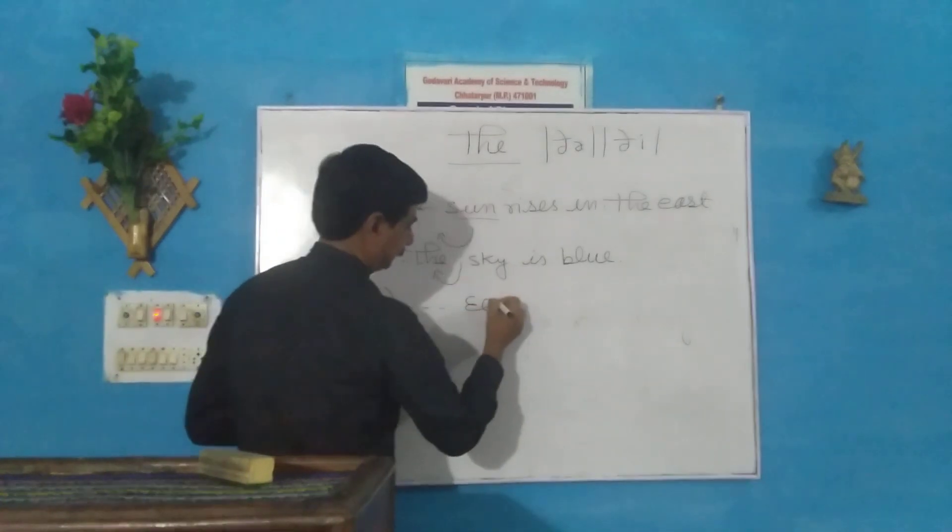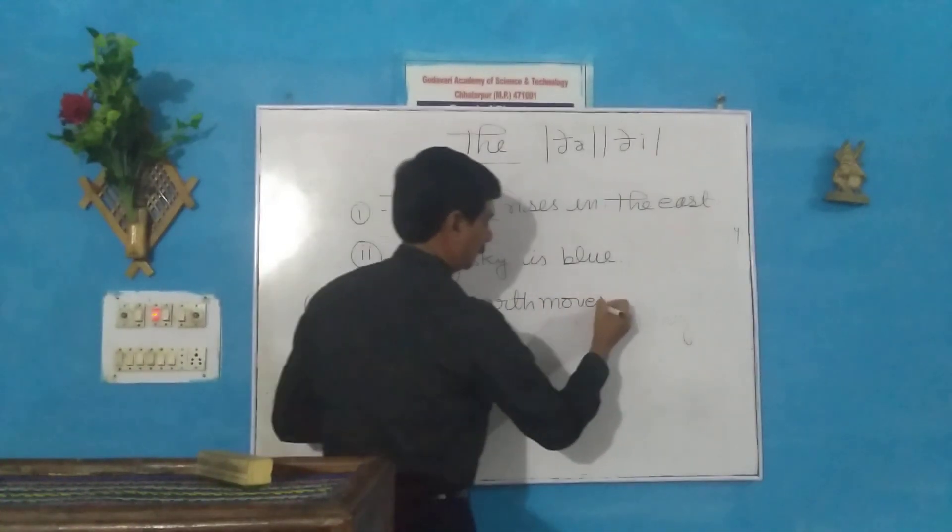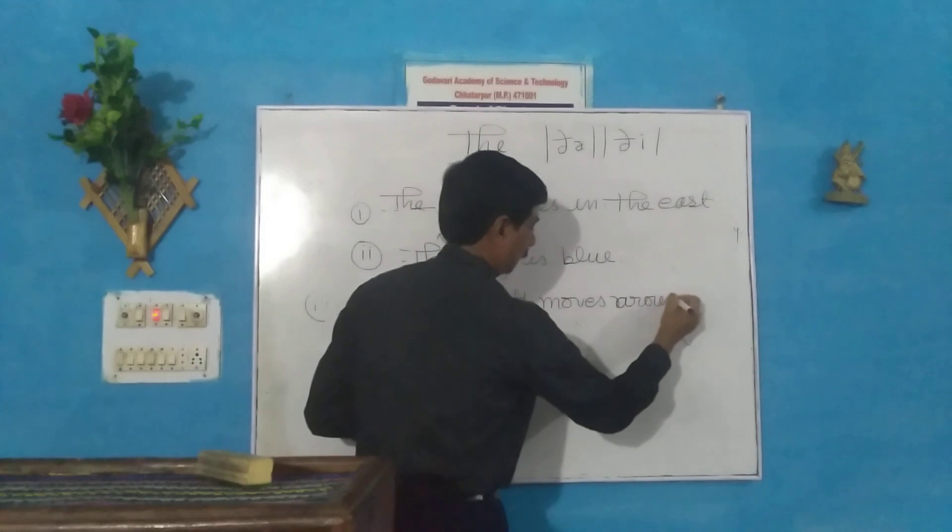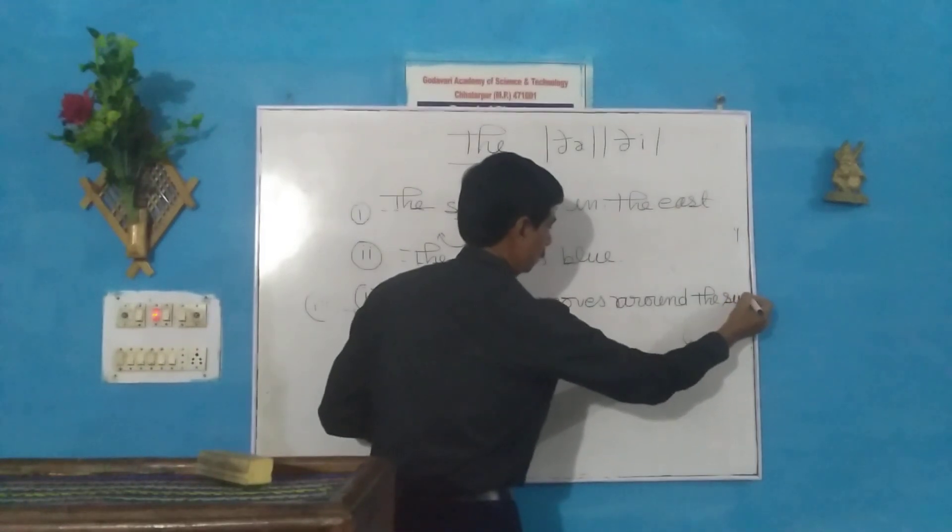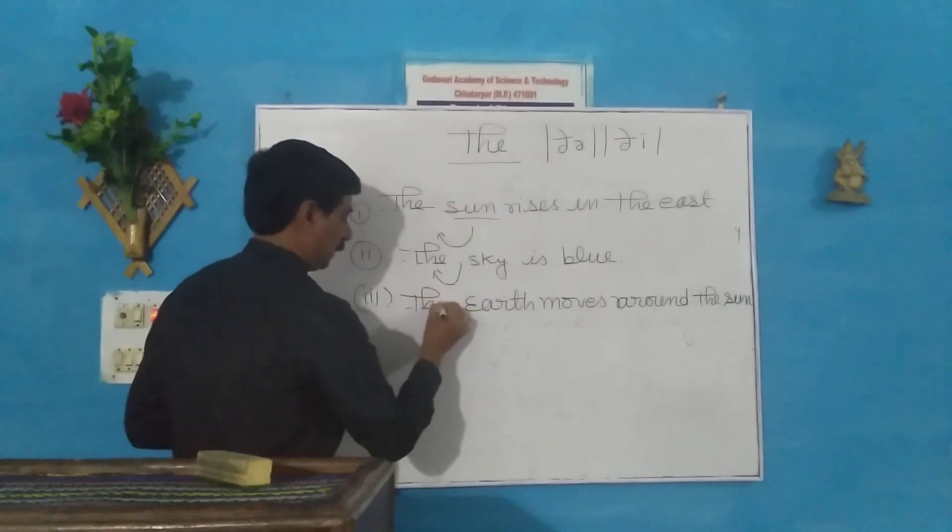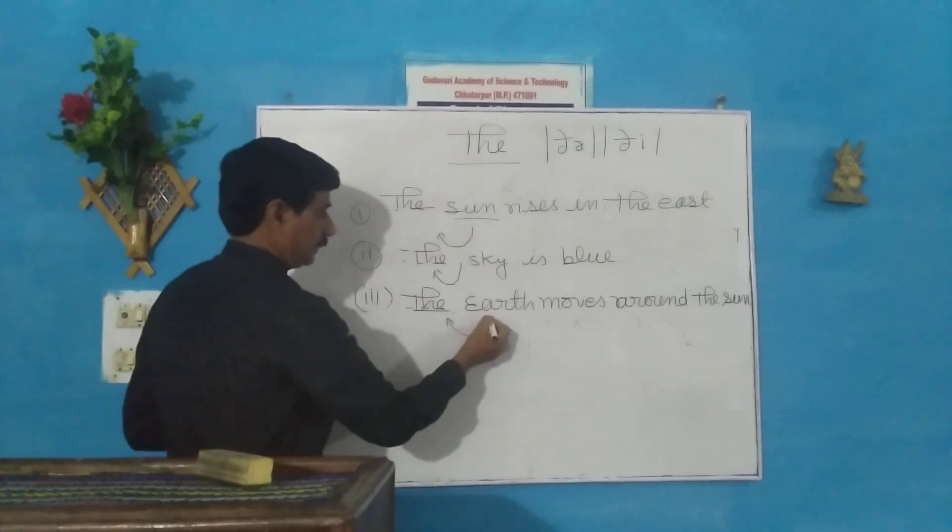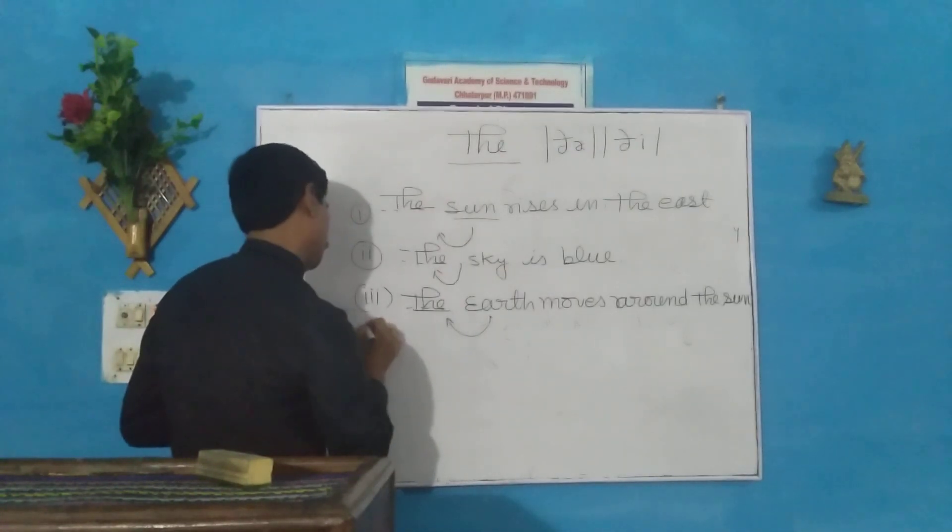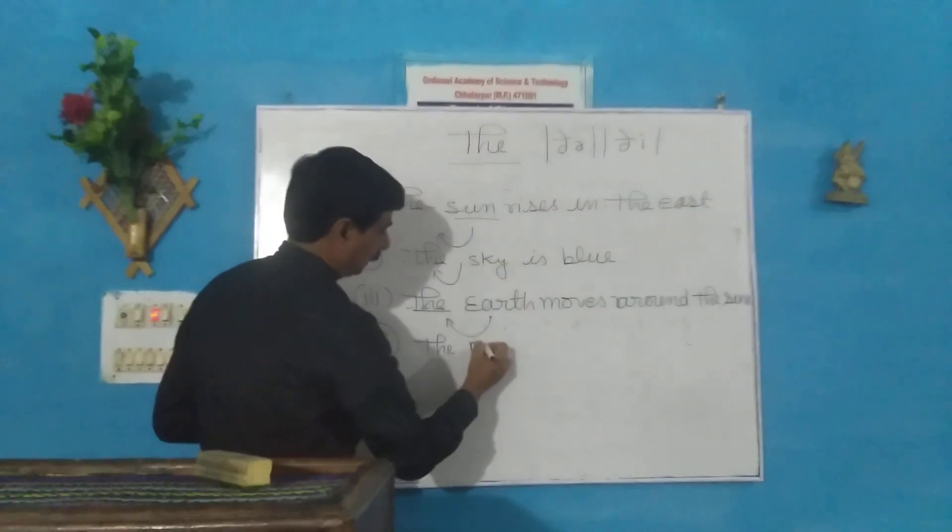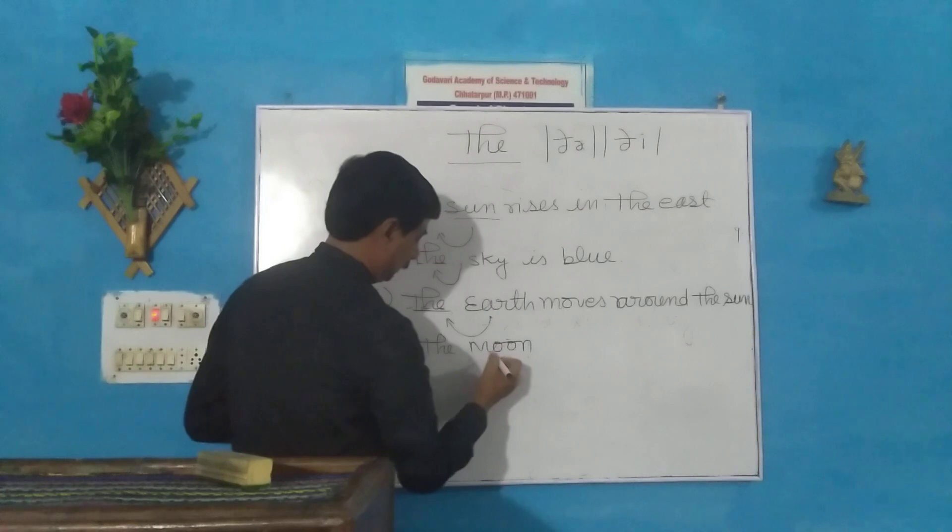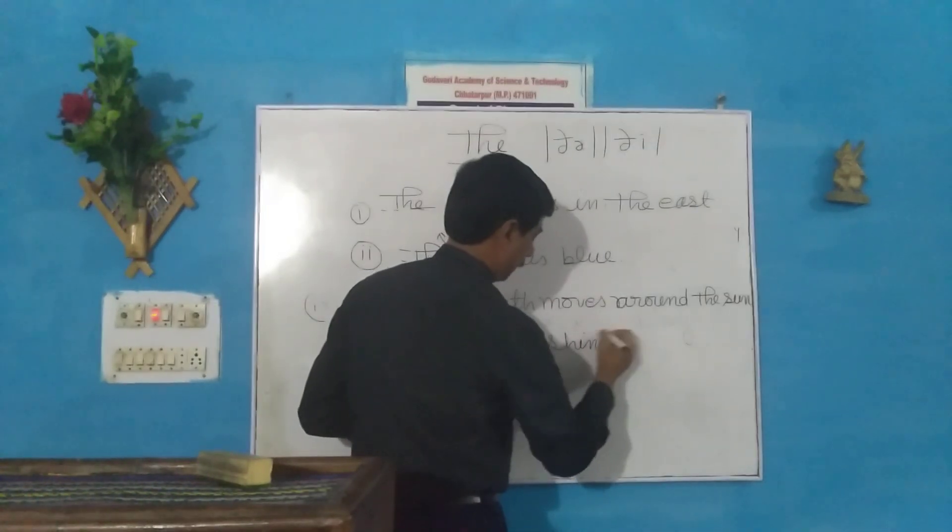The earth moves around the sun. So here, the earth moves around the sun. The moon shines brightly at night.